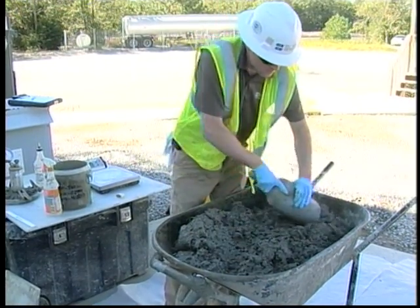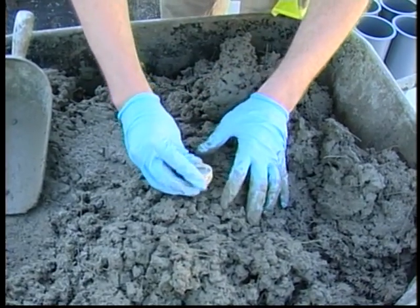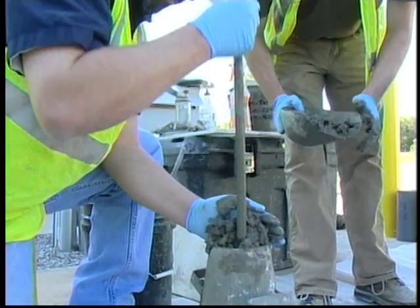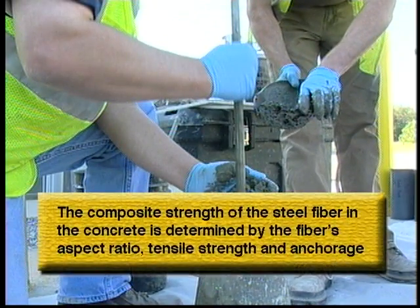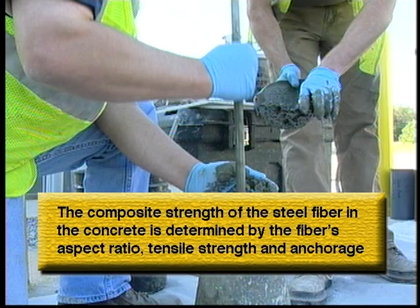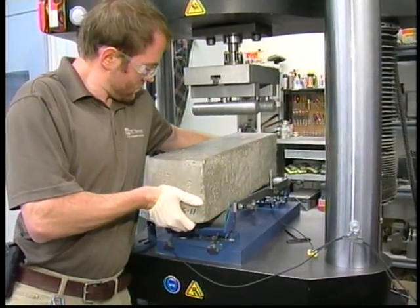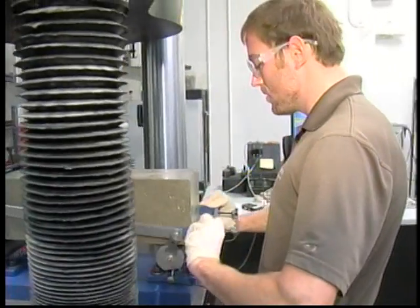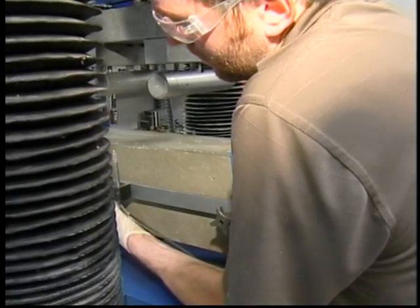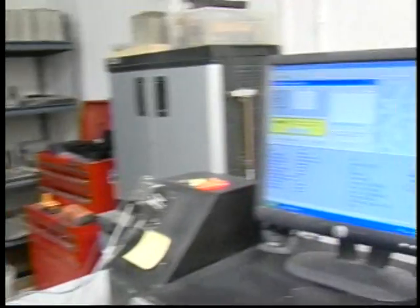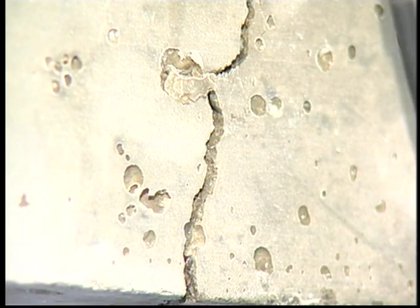Bekaert does extensive testing of concrete with steel fiber content and the testing data is used in the design of steel fibers and the concrete mix specifications. The testing is important since not all fibers are the same. The composite strength of the steel fibers in the concrete is determined by aspect ratio, tensile strength, and anchorage. We do a test with the steel fibers to prove their performance after the crack, and that performance is called EFS — equivalent flexural strength of the steel fibers in the concrete. We use that number to design, so it's a strength after a crack.